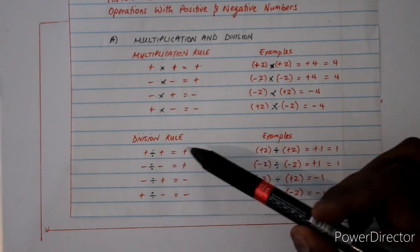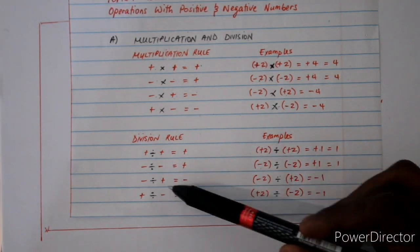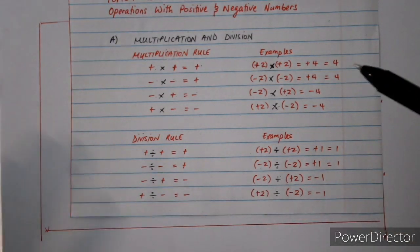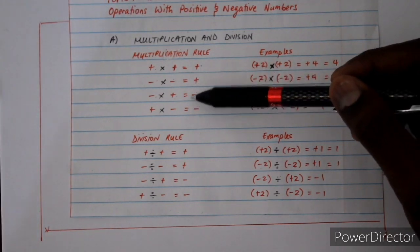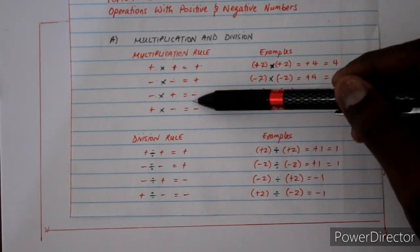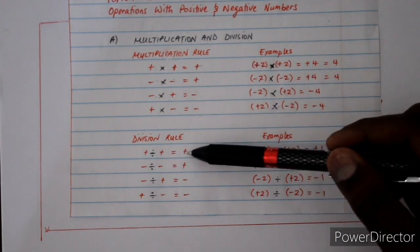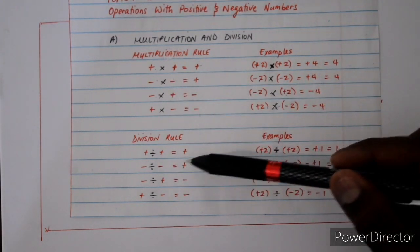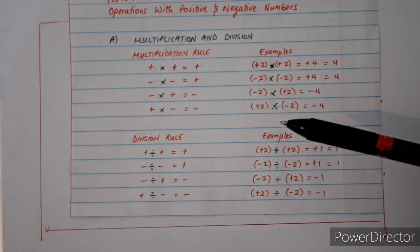Moving to division: positive divided by positive is positive; negative divided by negative is positive; negative divided by positive is negative; and positive divided by negative is negative. You will notice that the rules for the quotient and the product are the same — if you have two same signs the result is positive, whether you are multiplying or dividing.